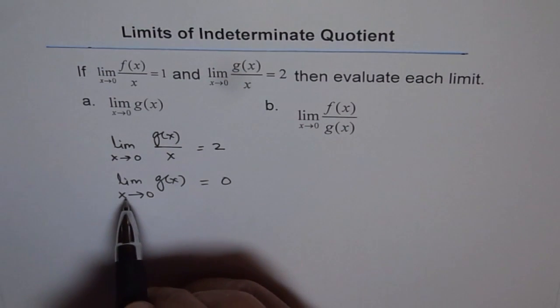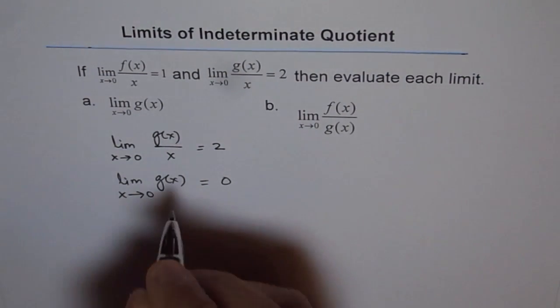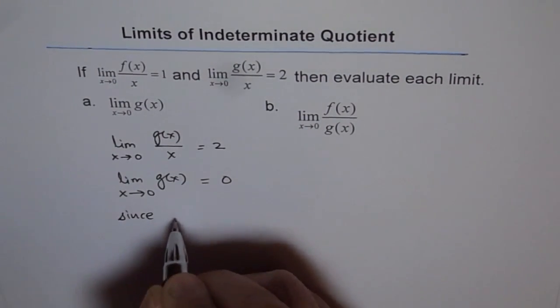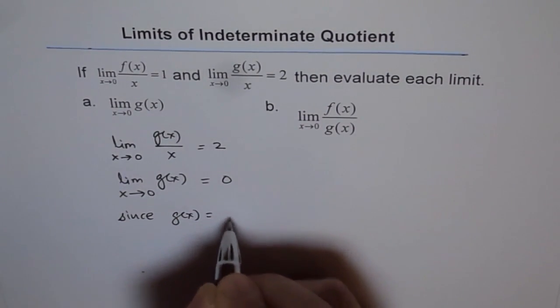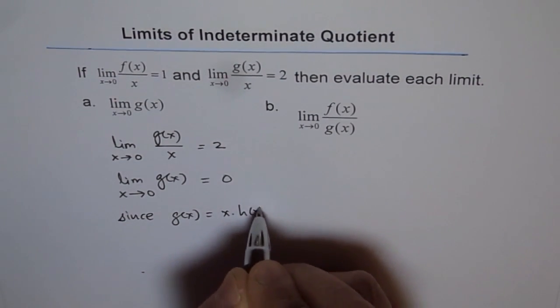When you substitute x equals to 0, you will get 0. Since g of x can be written as x times some other function, let it be h of x.